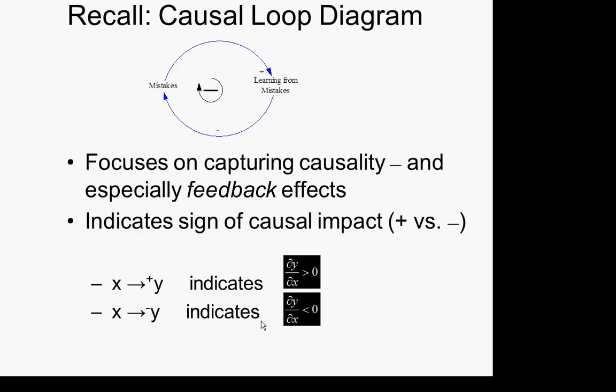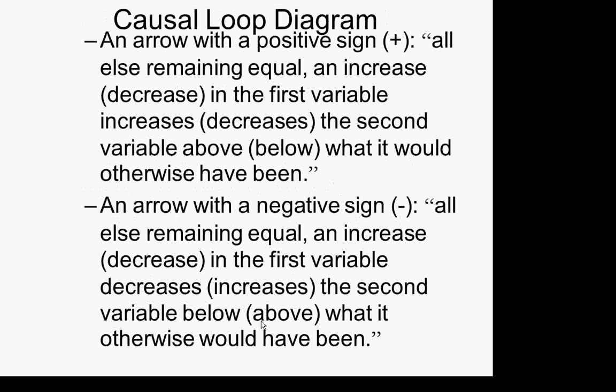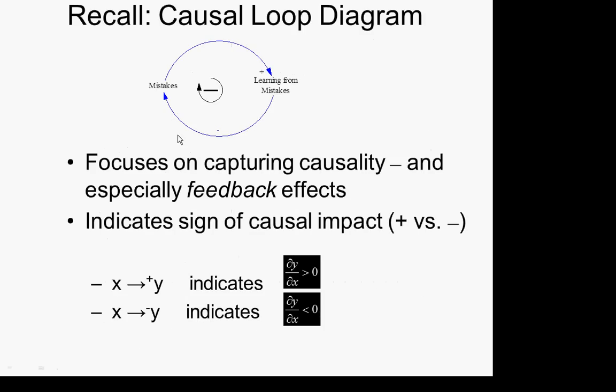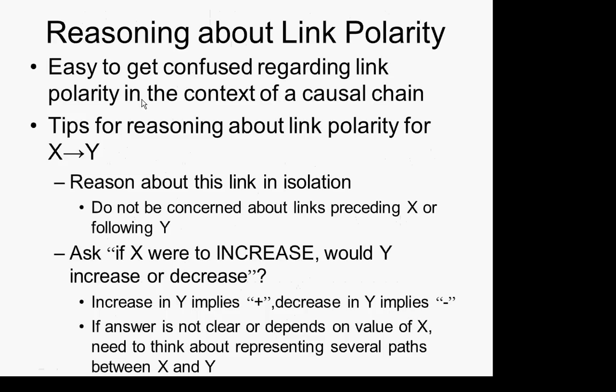For a negative connection — if A is connected to B with a negative sign — an increase in learning from mistakes will tend, all other things equal, to lead to a decrease in later mistakes. These diagrams represent a hypothesized understanding of how the world works and are ways of capturing our reasoning about how these factors are linked together. A given diagram may seem more or less plausible, but they're ways of getting that understanding out of our heads and into a place that we can all look at, critique, refine, and improve.